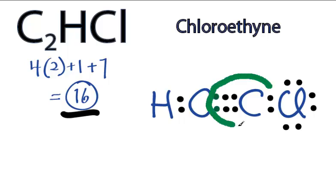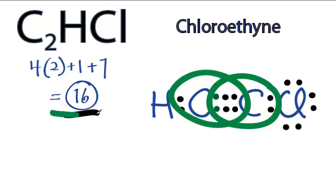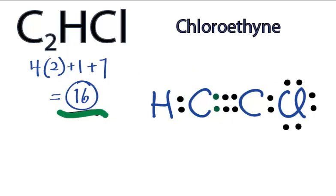Now, this carbon has 8 still, but this carbon has 8, and we're only using 16 valence electrons for the C2HCl Lewis structure. So we've used all 16 valence electrons. We have full outer shells for all of the atoms in the C2HCl Lewis structure. We're done.